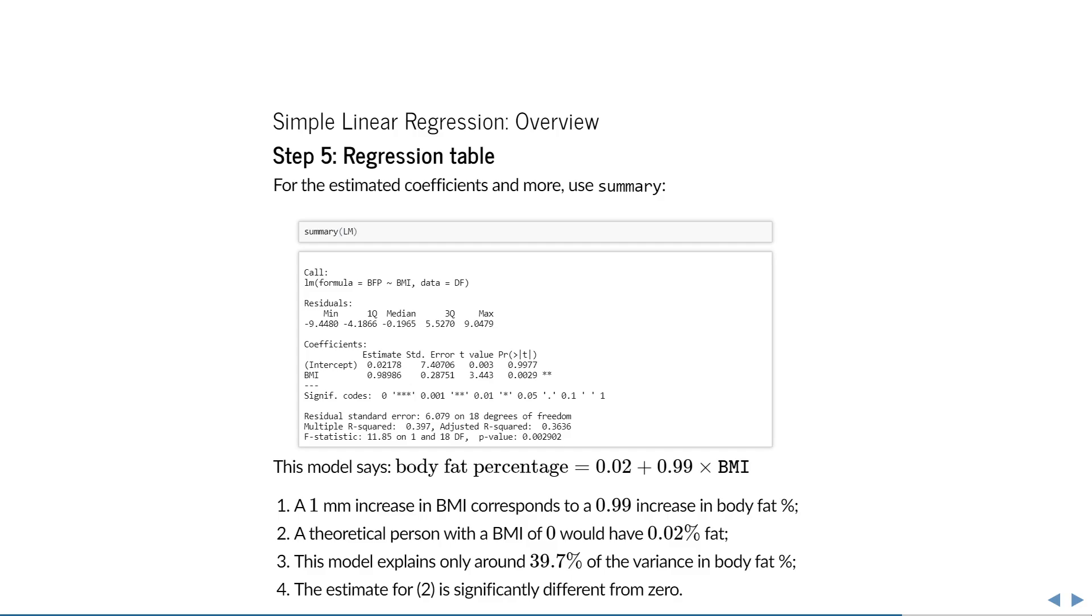Once you get past that point, you can easily generate a useful regression table with the summary function. You can run summary, open brackets, your model name, and then close brackets, and you will see something like the following. First, we see what R has actually done. A call to LM with the formula we specified and the data we supplied. You might be wondering what the point of this is, but if you had several models to compare, then it's good to know which one you're looking at now. Then we see a very simple summary of the residuals.